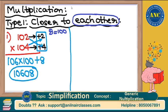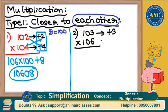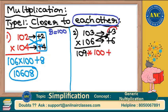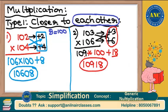Another example: 103 into 106. This is 3 more than 100, and this is 6 more than 100. Cross addition: 103 plus 6 is 109. 109 into 100 is 10900, plus 3 into 6 which is 18. Answer is 10918.